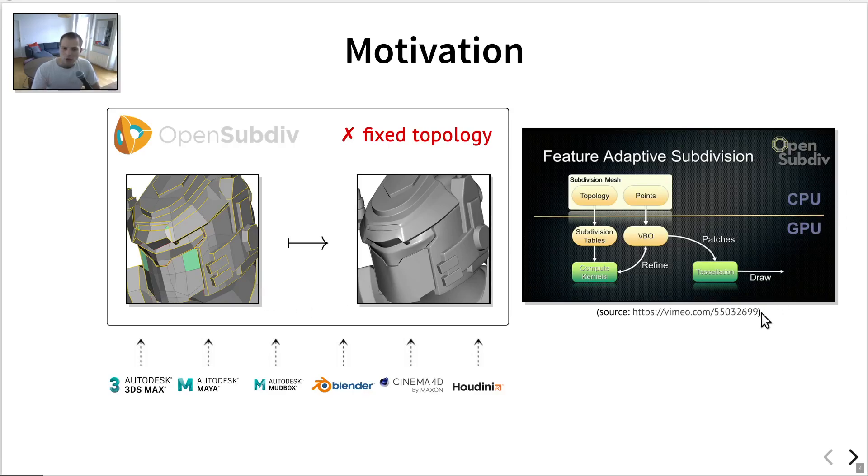And the reason for this is because it's actually built on feature adaptive subdivision, which is a paper by Niesner and colleagues that was introduced a few years ago. And the way this works is it actually pre-processes the control cage using the CPU. And the pre-processing stage uses it to create a bunch of bicubic patches that can be evaluated analytically to immediately evaluate the limit surface produced by the subdivision.